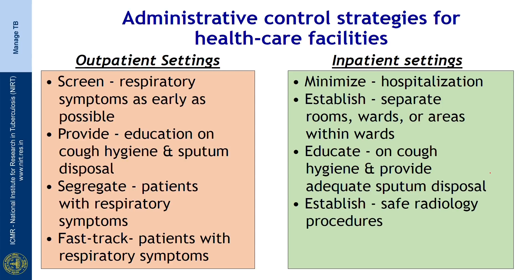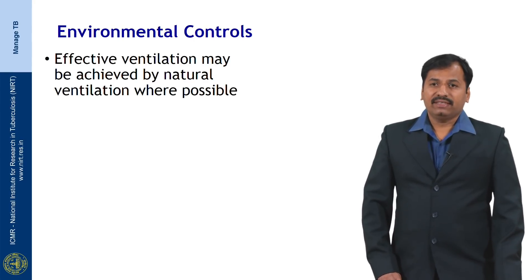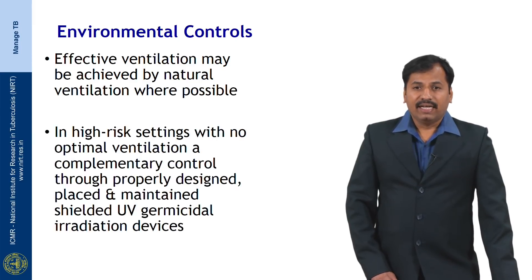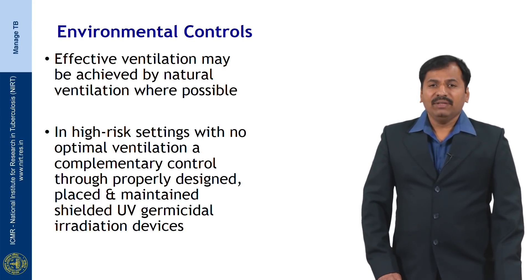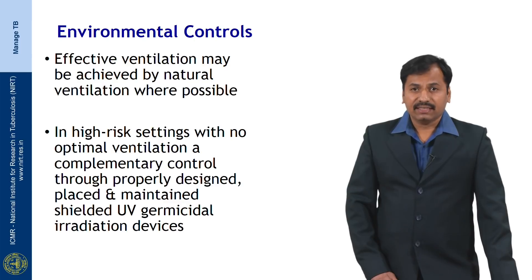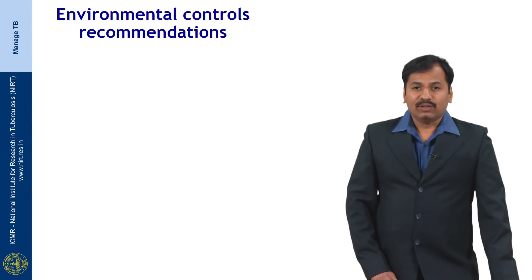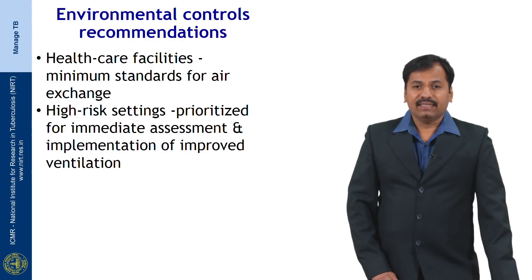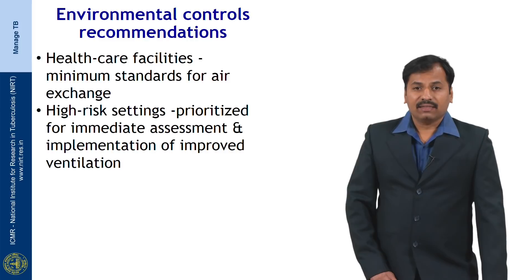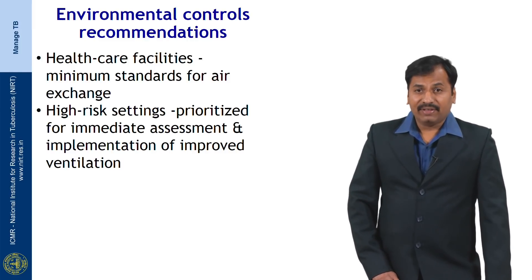Establish safe radiology procedures. For environmental controls, one basic and important concept is natural ventilation. Effective ventilation may be achieved by natural ventilation wherever possible. In high-risk settings with no optimal ventilation, a complementary controlled approach using properly designed, placed, and maintained shielded UV germicidal irradiation devices can be used. Healthcare facilities should maintain a minimum standard for air exchange, and high-risk settings should be prioritized for immediate assessment and implementation of improved ventilation.